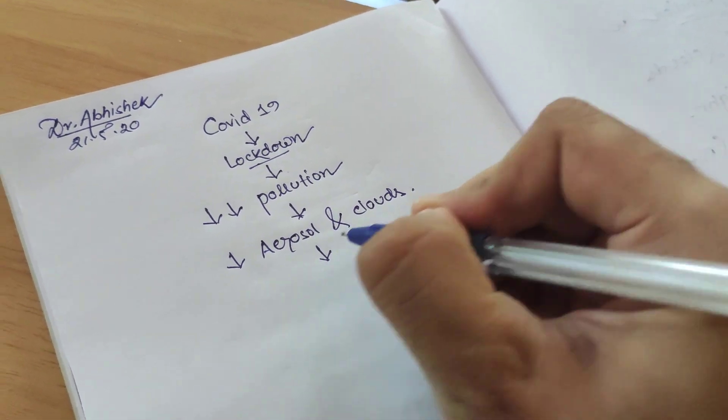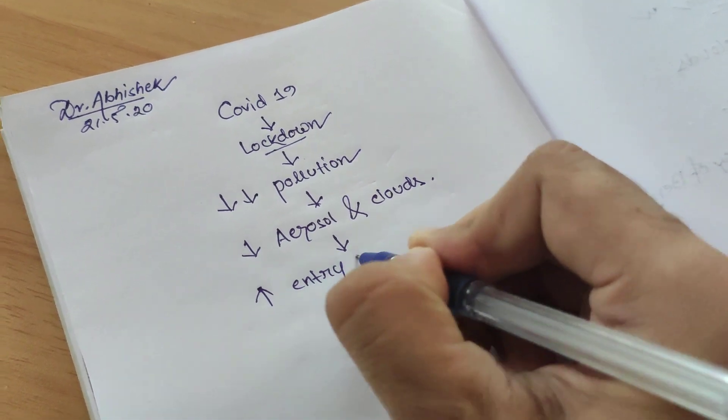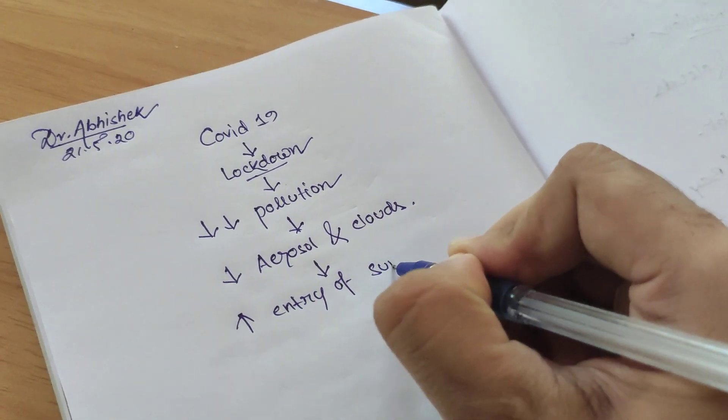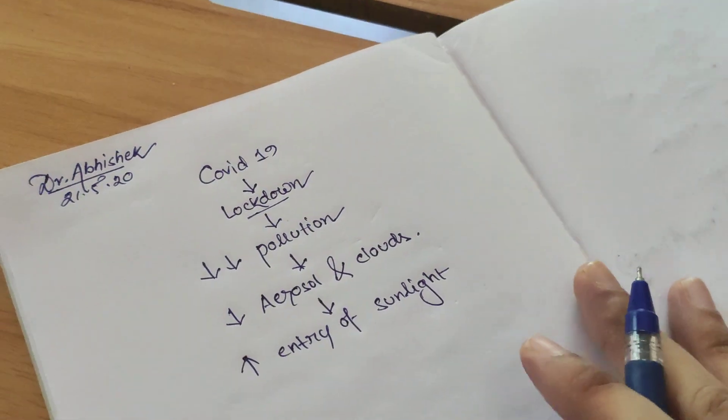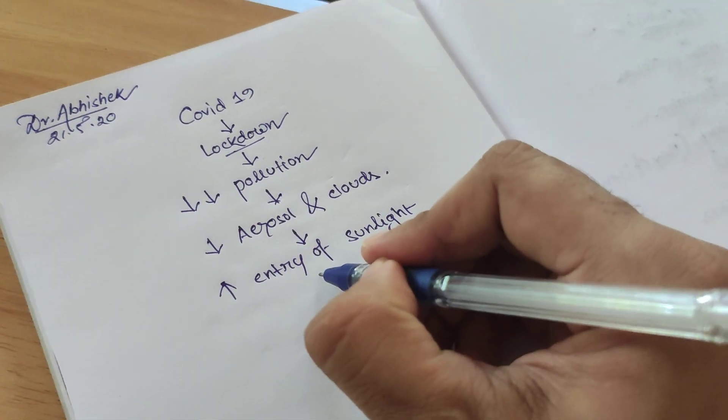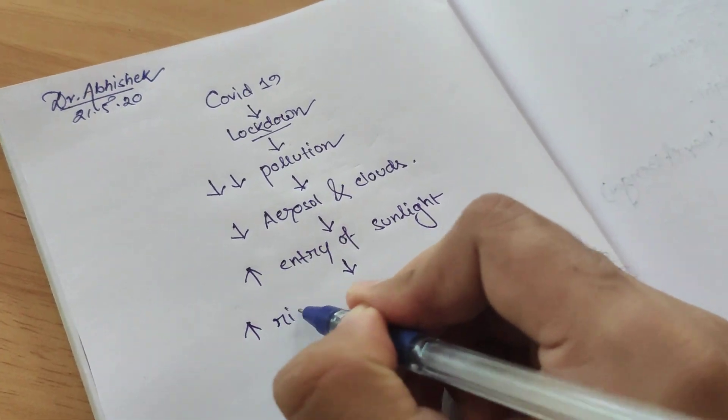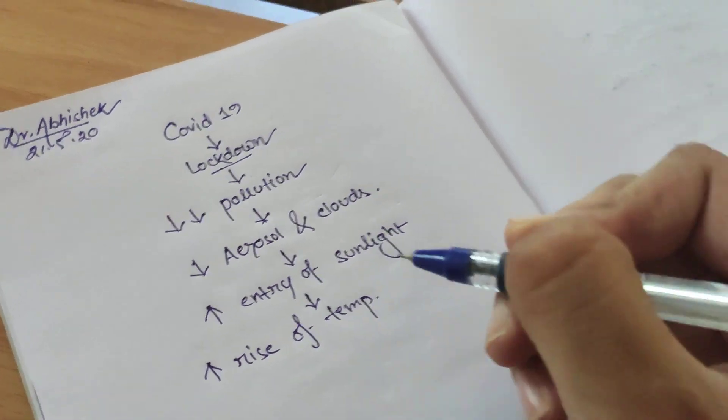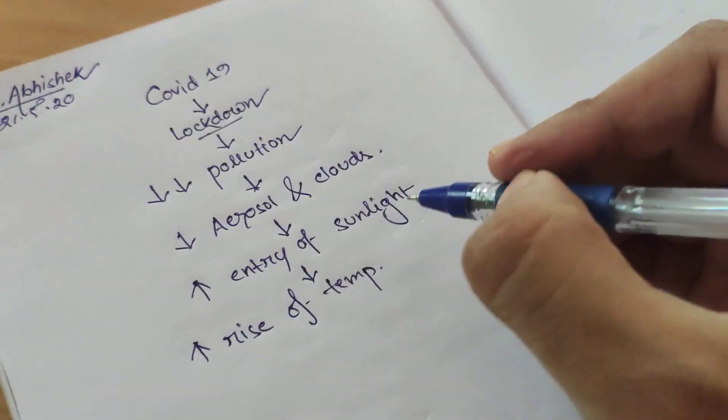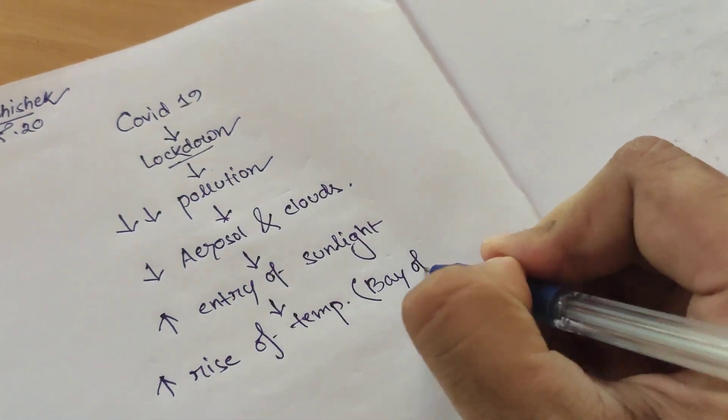So that is causing increased entry of sunlight and other radiations, and that is causing a rise of temperature over the sea surface. Here we are concerned about the Bay of Bengal.